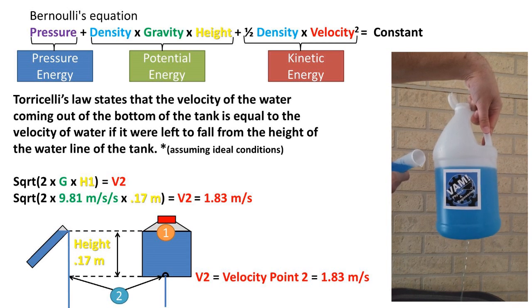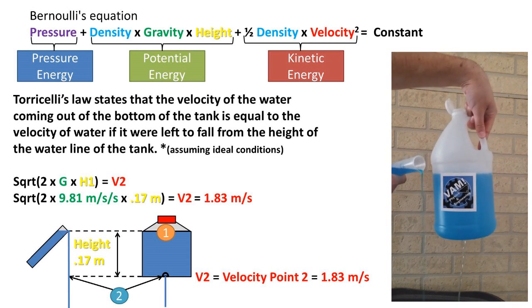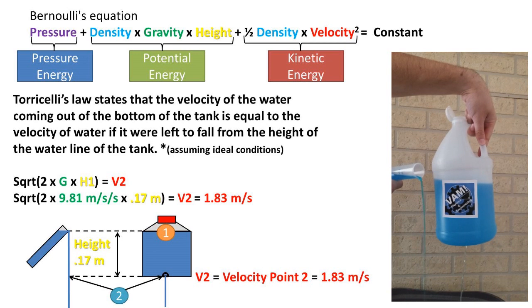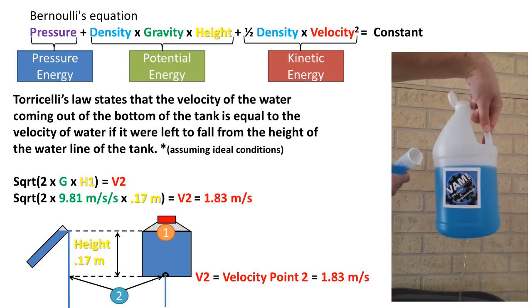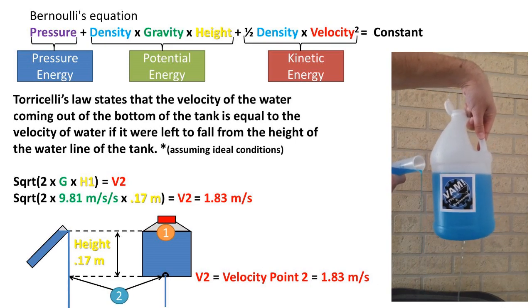This problem illustrates Torricelli's law. Torricelli's law states that the velocity of the water coming out of the bottom of the tank is equal to the velocity of the water if it were left to fall from the height of the waterline of the tank.